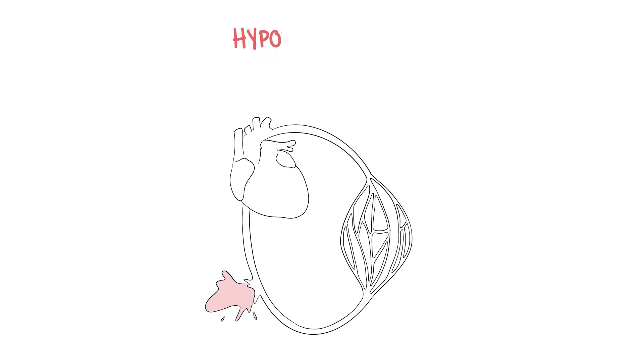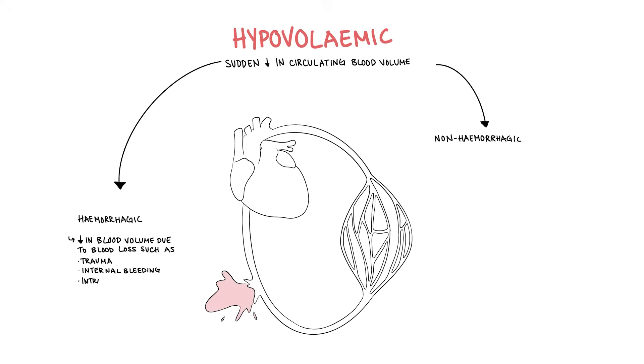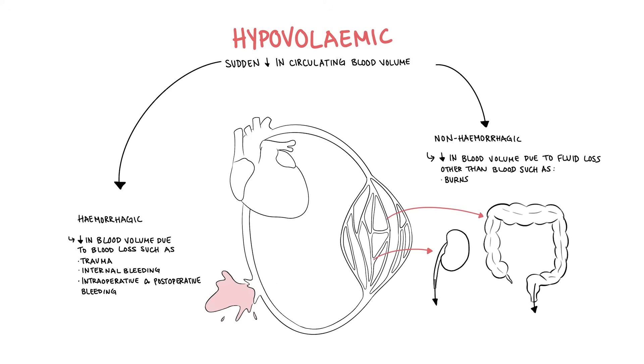The first type of shock is hypovolemic shock and this is caused by a sudden decrease in circulating blood volume. This can be divided into hemorrhagic and non-hemorrhagic causes. Hemorrhagic causes include a decrease in blood volume due to blood loss such as trauma, internal bleeding, intraoperative or postoperative bleeding. Non-hemorrhagic causes is a decrease in blood volume due to fluid loss other than blood such as burns, loss of sodium and water from the gastrointestinal tract, the skin and the kidneys. Essentially loss of blood volume results in both a reduced total peripheral resistance and/or a reduction in cardiac output which will result in a reduced mean arterial pressure.